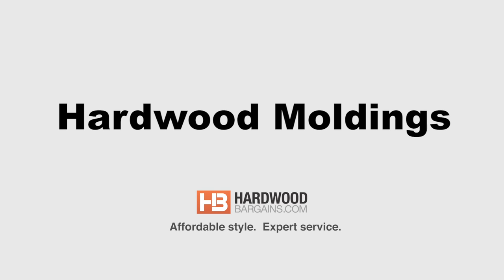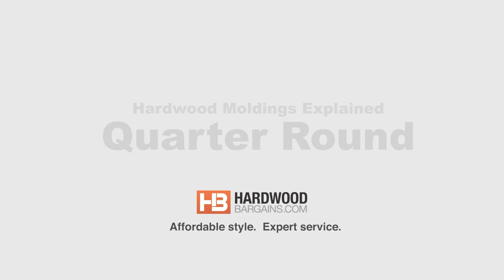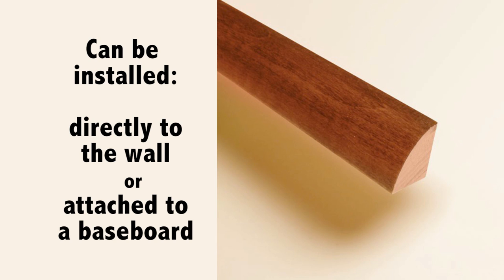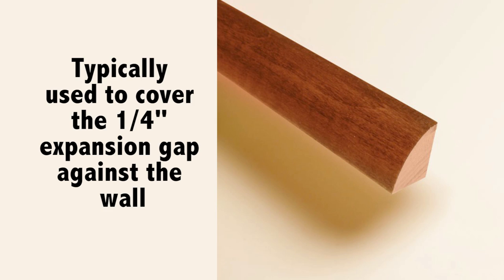Wood moldings explained. This molding is called quarter round or shoe molding and it gets installed along the base of your wall. They can be attached directly to the wall itself or to the baseboard you may already have. You can also use this for aesthetic purposes, but it's commonly used to cover the quarter inch expansion gap recommended to be left for slight variance in the size of your floor over time.